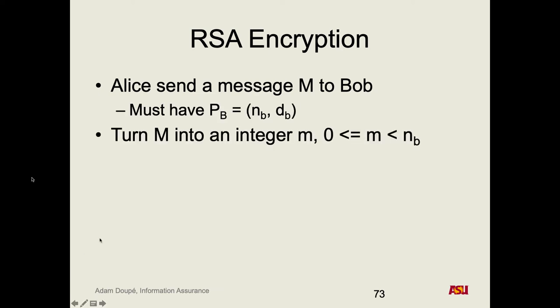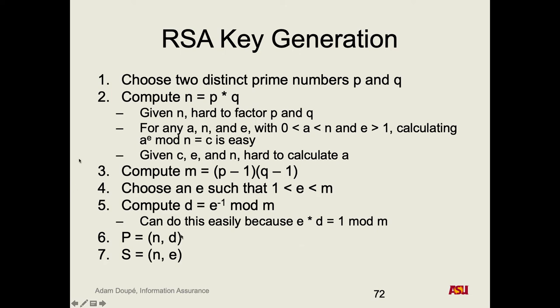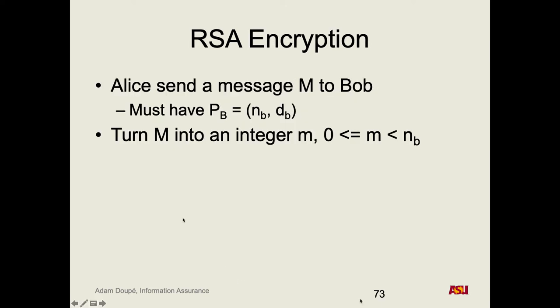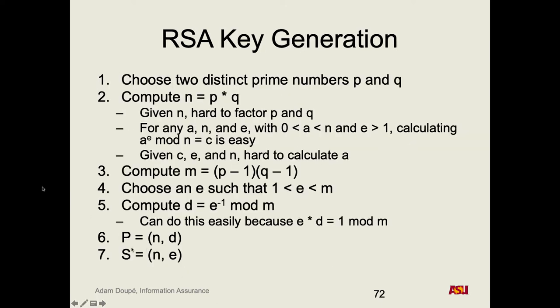We're limited in this scheme by sending messages that are less than N. So our N, which was P times Q — we give people the public key, we give people N. Everyone knows N. By the basis of what we're doing this on, it is very difficult to factor N. If it was possible to factor N, this entire scheme breaks down because somebody could derive P and Q and then they break the whole system.